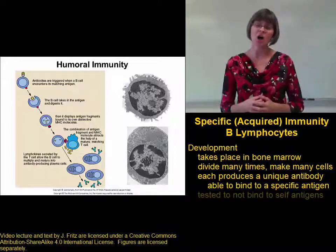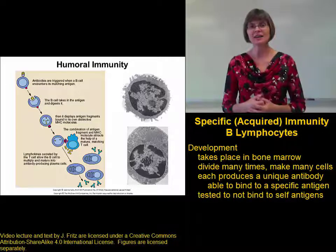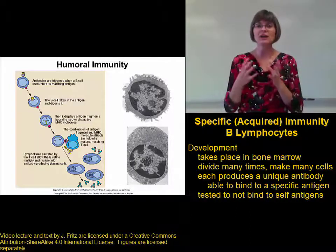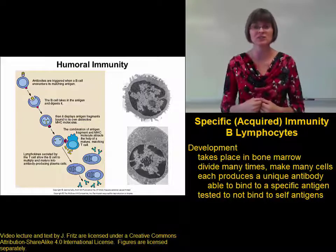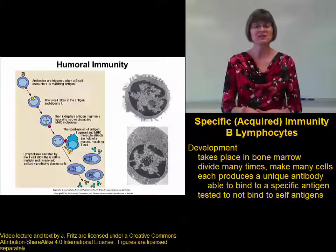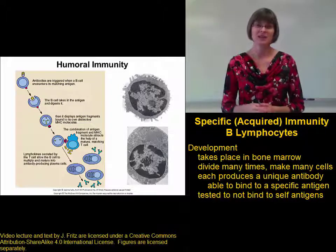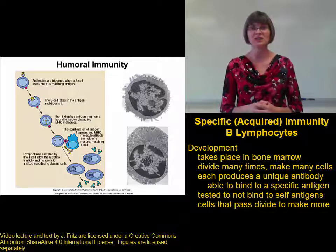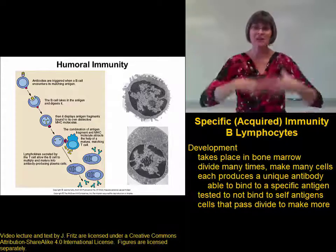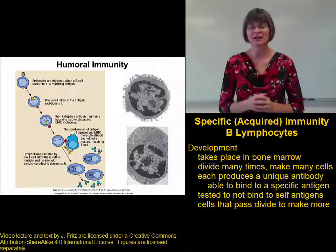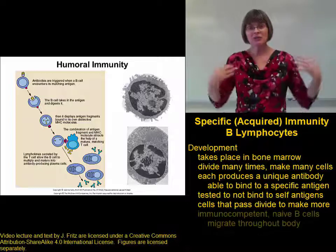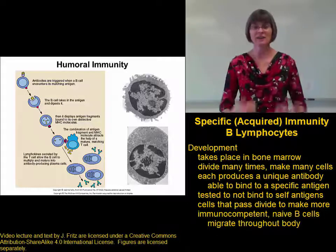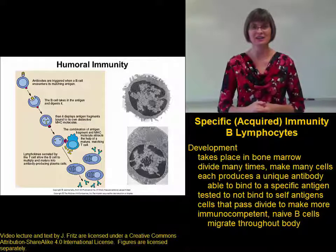So just like we saw with the T cells, B cells need to be tested. B cells go through a testing stage to make sure that their antibodies do not bind to self-antigens. If they do, the B cell is destroyed. The B cells that pass the test — the ones with antibodies that don't bind to our own antigens — then divide to make many more copies of B cells with that particular antibody. And they migrate out into the body and go to the various lymphatic tissues and lymphatic organs, similar to what we saw with the T cells.